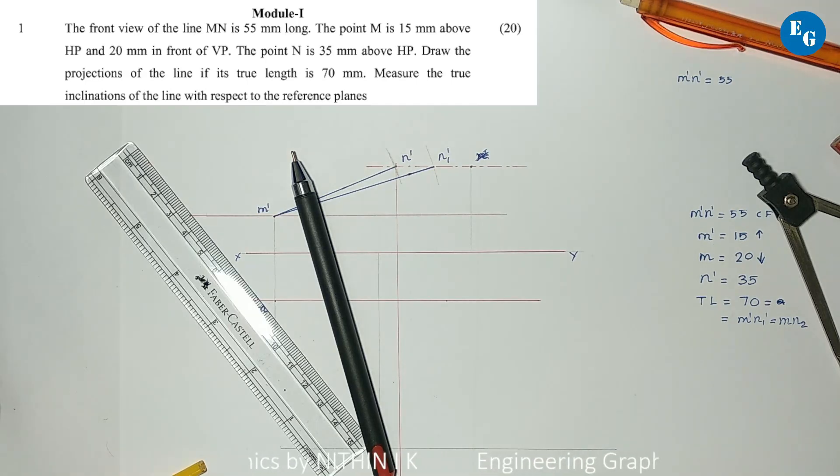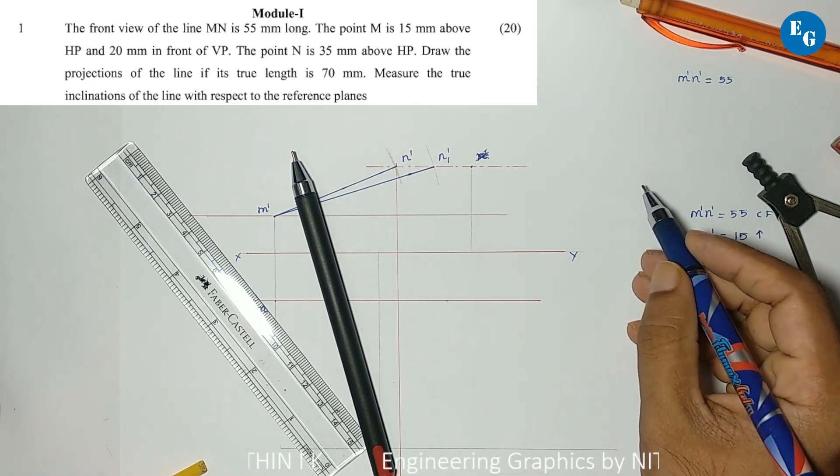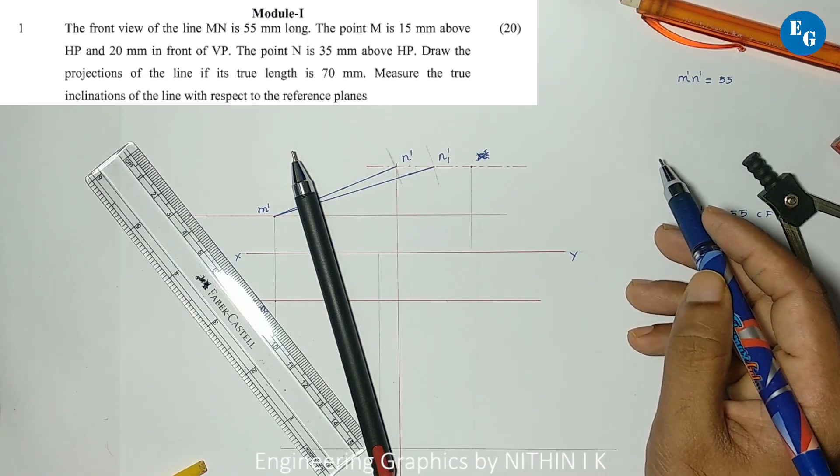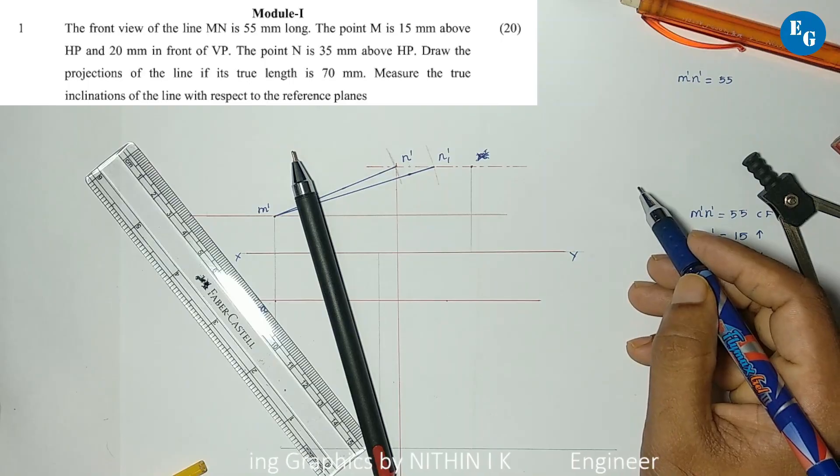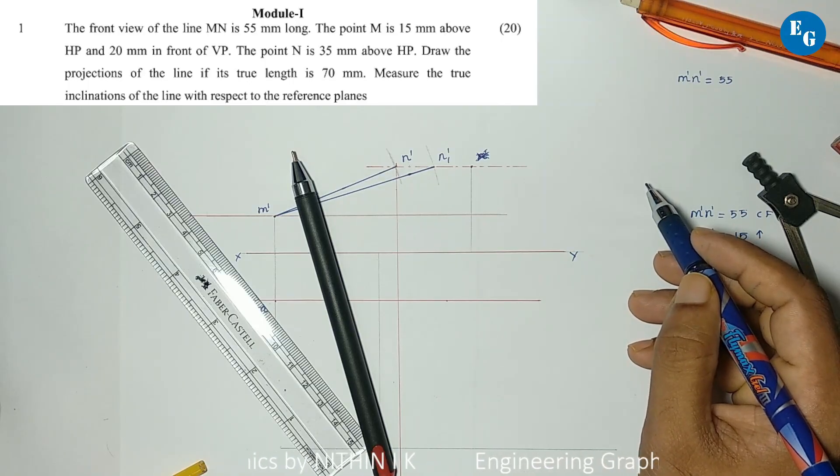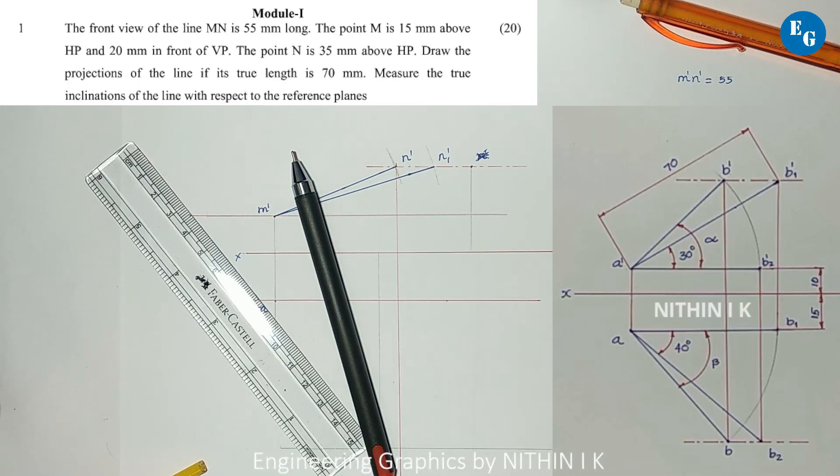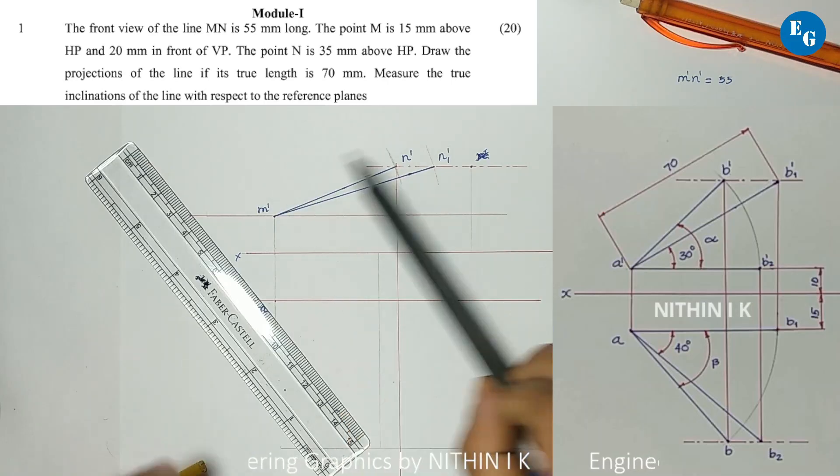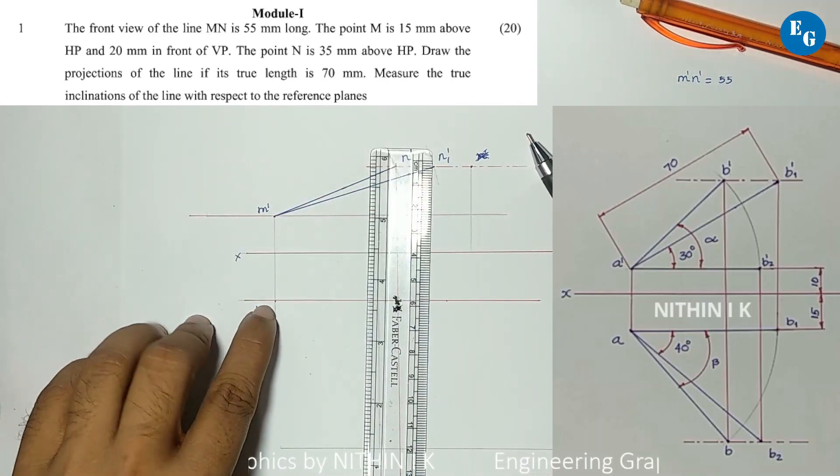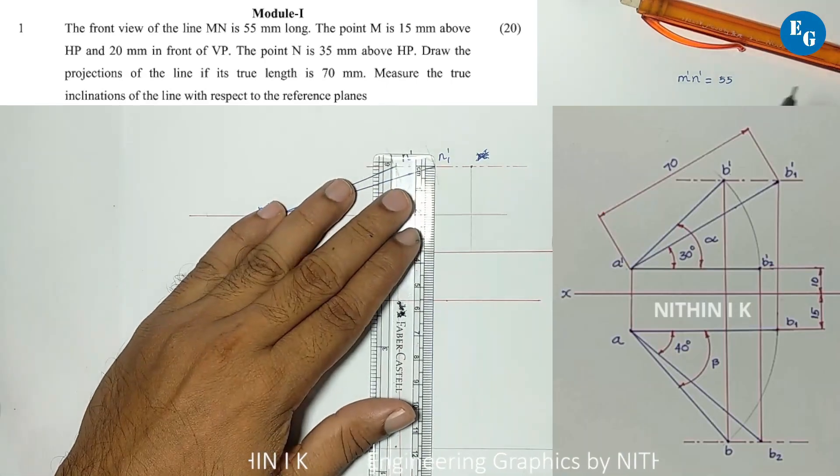This is the first case. In this problem, a dash b dash in the front view and ab in the top view are located. The true length locus m dash n1 dash line gives us the top view.